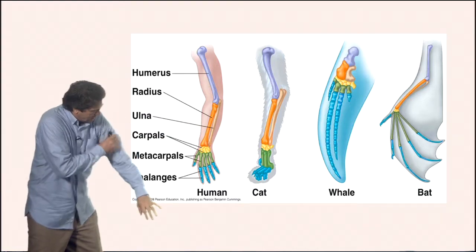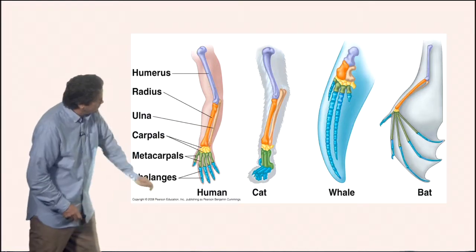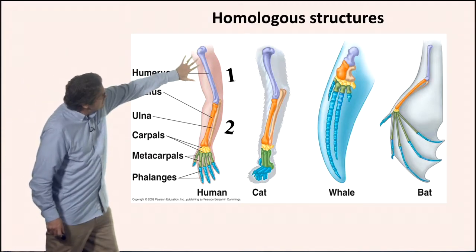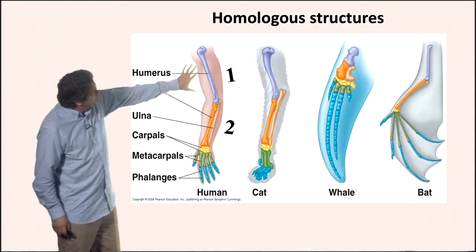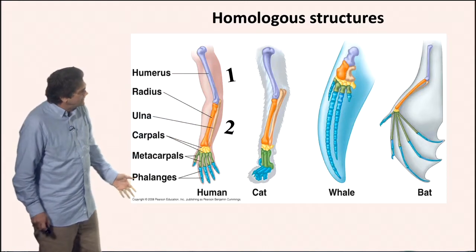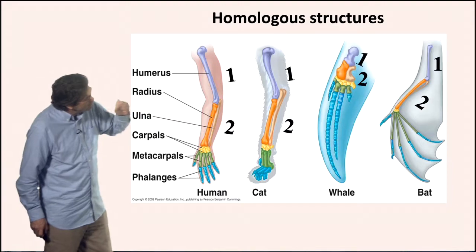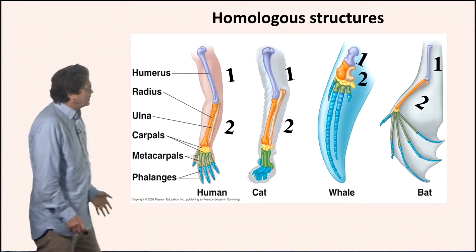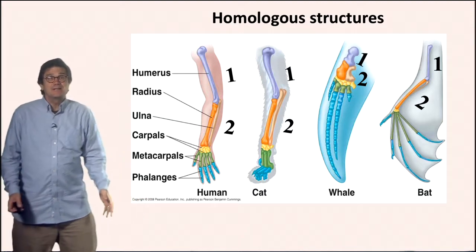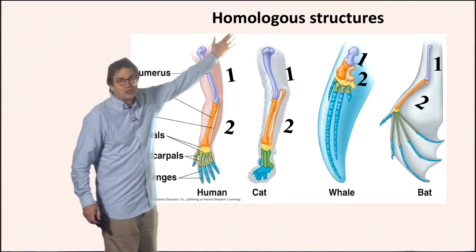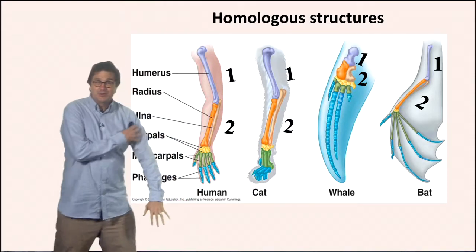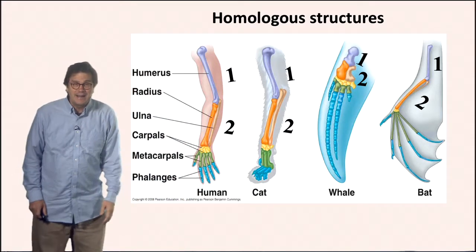So one bone here, two bones here, and then we have these other bones. Notice that this is a one and then two pattern — one bone and there are two bones. The same pattern is in the cat limb, the whale, and the bat limb. All of these mammals have the same pattern, and the reason is because these are homologous structures.